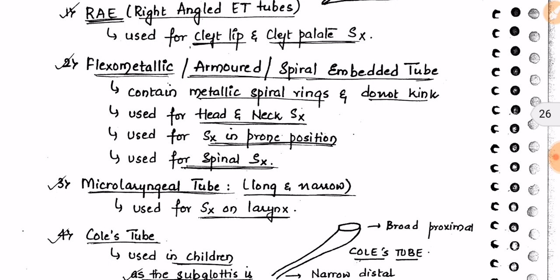The armored spiral tube does not kink. It is used for head and neck surgeries, surgeries in the prone position, and spinal surgeries. Recall that the red rubber tube has a tendency to kink, whereas the flexometallic armored tube does not.